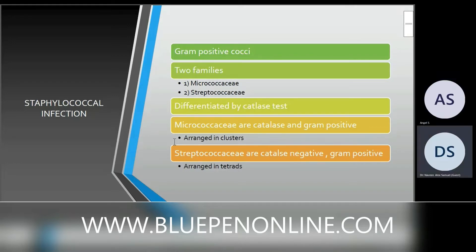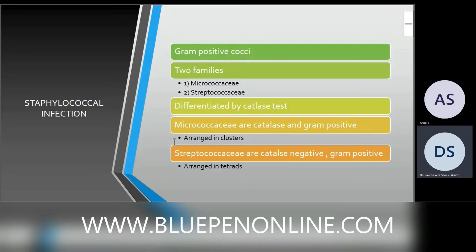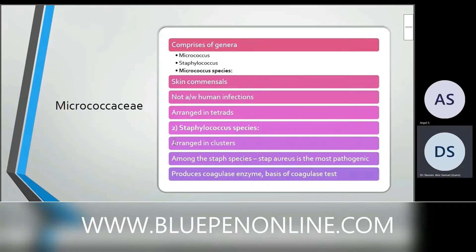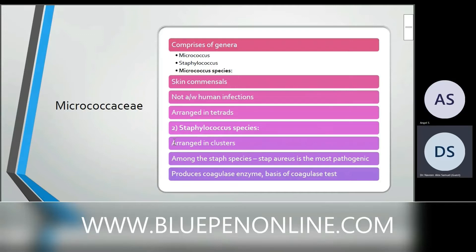The Streptococcaceae family includes Streptococcus species. They are catalase negative but gram positive, arranged in tetrads — meaning chains of four or more. The Micrococcaceae family includes two comprehensive genera: Micrococcus and Staphylococcus.